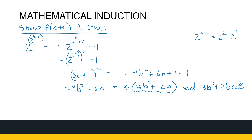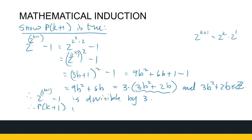Therefore, I've shown that 2^(2^(k+1)) minus 1 is divisible by 3, because it equals 3 times an integer. So P(k+1) is true, and therefore P(n) is true for all natural numbers.